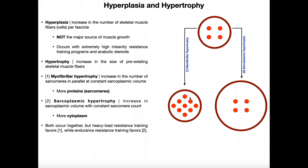The second kind of hypertrophy is sarcoplasmic hypertrophy. This is an increase in the sarcoplasmic volume with a constant sarcomere count. So if you had 100% sarcoplasmic hypertrophy, the number of sarcomeres would not change, but the cell itself would be much bigger — increased in diameter. And anything that comes with the cytoplasm, you would have more of that as well.